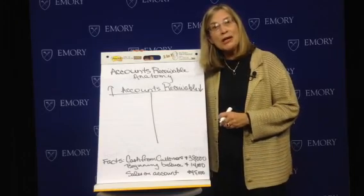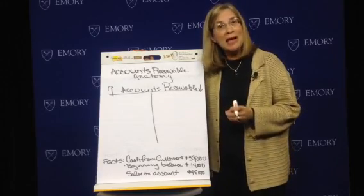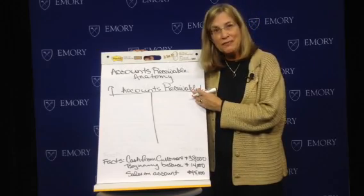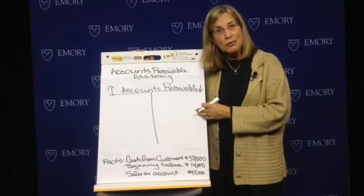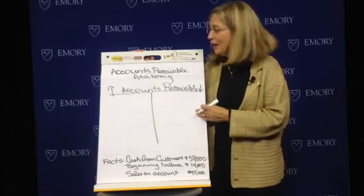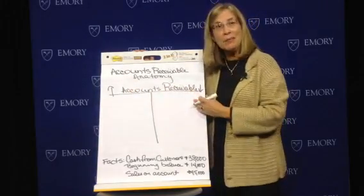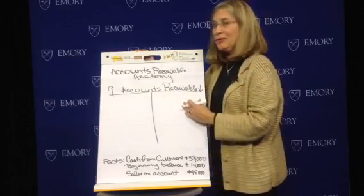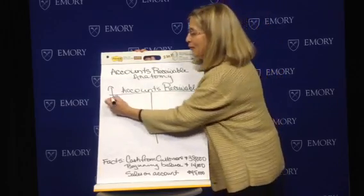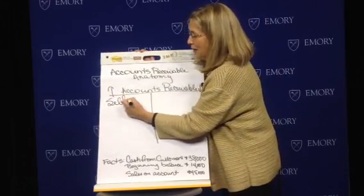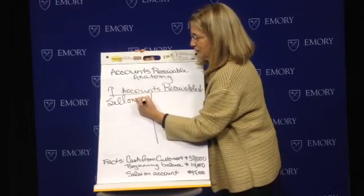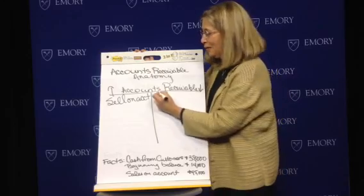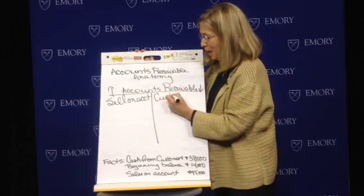Hello. Today we're talking about the anatomy of different accounts, and right now we're going to talk about accounts receivable. You remember that accounts receivable is a current asset, so it's increased by debits and decreased by credits. Accounts receivable would increase when you sell on account, and it will decrease when customers pay their bills.